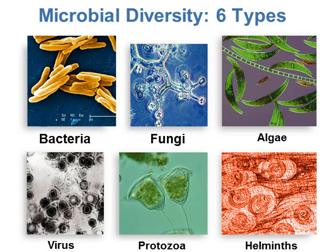The six different types of microorganisms we're going to be looking at include bacteria. A lot of this course is going to be focusing on bacteria — how they cause disease, what they look like, the different types — and we're going to work with bacteria quite a bit in lab as well. But we're also going to be looking at fungi, algae or the plant-like organisms. There's a chapter on viruses, looking at how those work and how they cause disease. We're going to look at protozoans, which are animal-like organisms, and then the last type is the helminths, or the parasitic worms.